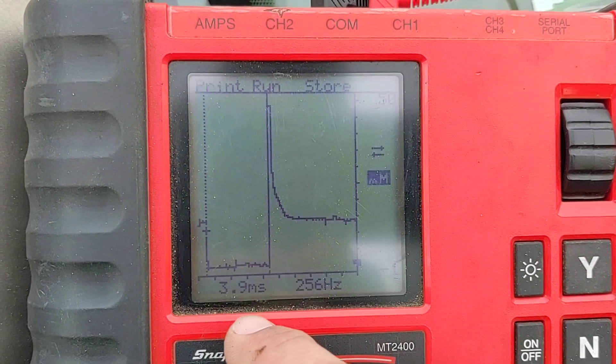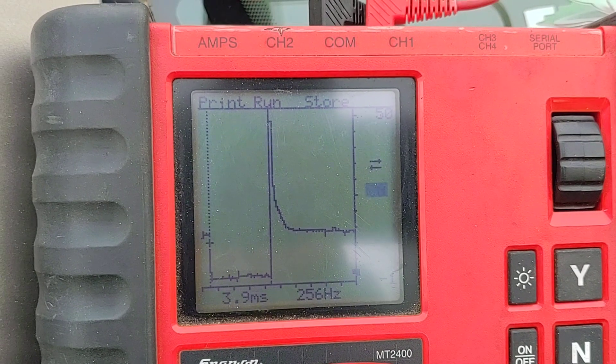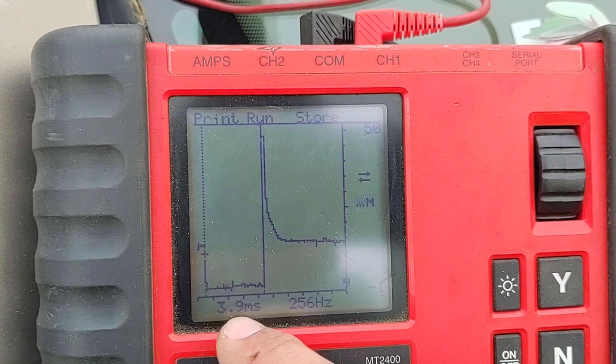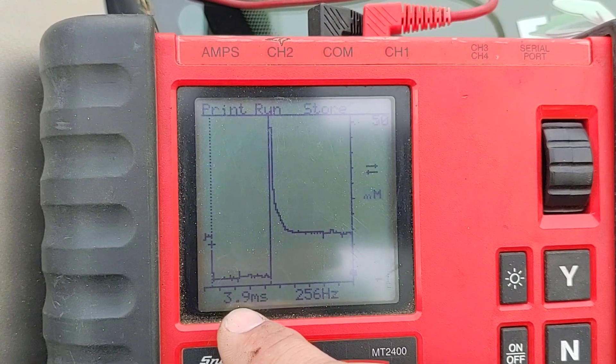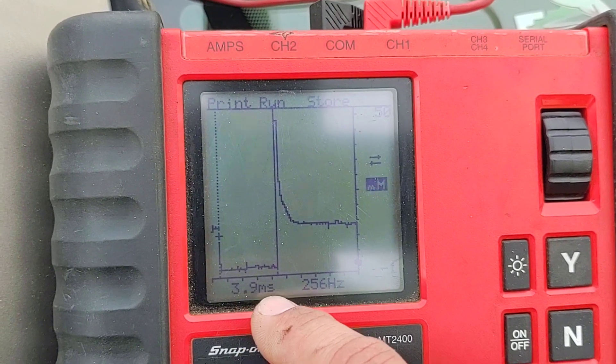So that measurement right there is 3.9 milliseconds, which is pretty typical for an injector at idle. When an engine's idling, it doesn't need a whole lot of fuel. 3 to 4 milliseconds is pretty common. I've seen them even lower. I've seen them down around 2.5 milliseconds. You don't generally see it much higher than 4. That's pretty much your upper limit.